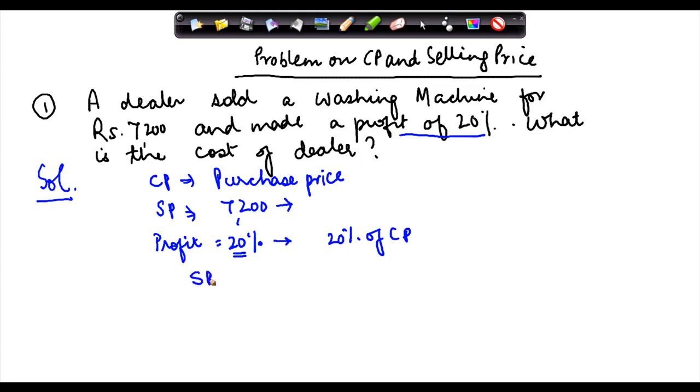Now we all know that selling price is equal to cost price plus profit. Whatever money I paid to buy it plus my profit is equal to the selling price. Now if in this equation I put in the values, I get 7200 is equal to cost price plus profit which is 20% of cost price. So I can write this as 20 upon 100 into cost price.